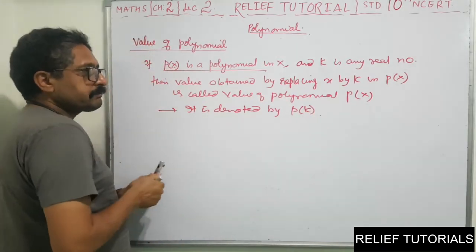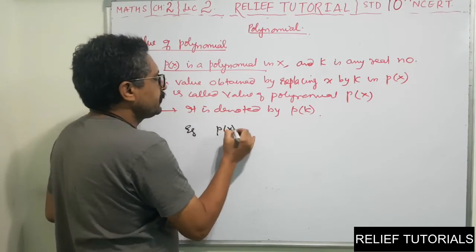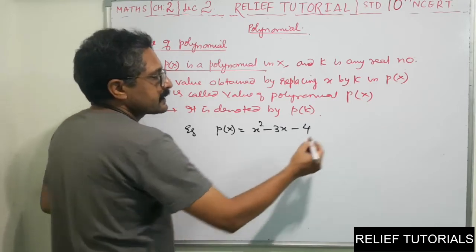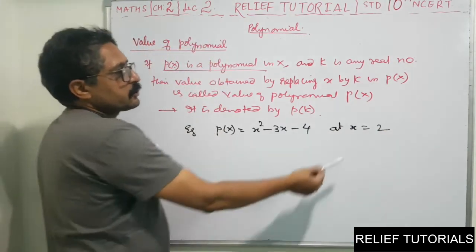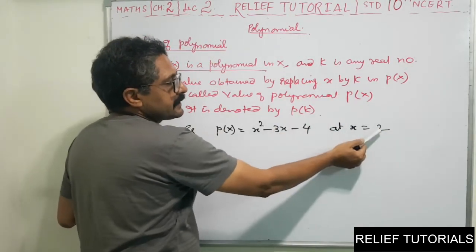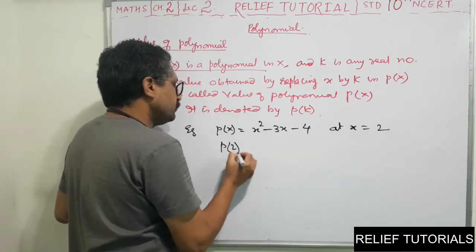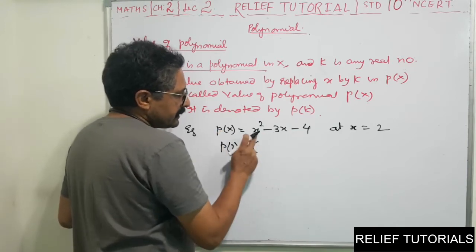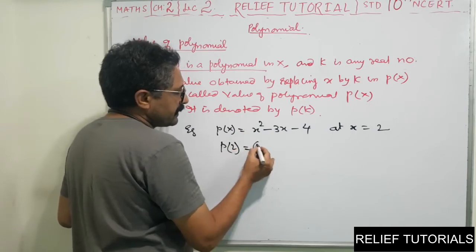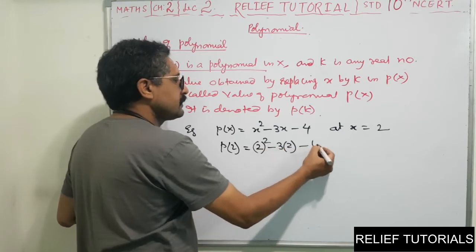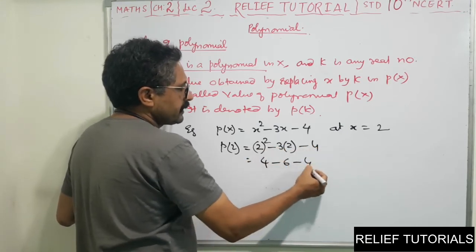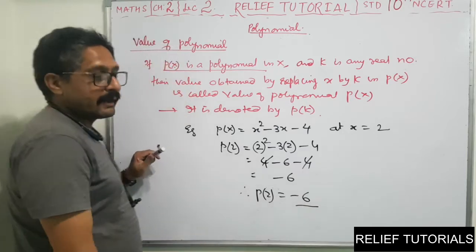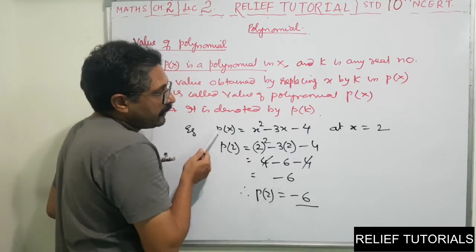For example, take polynomial P of X equals X squared minus 3X minus 4. We want to find the value at X equal to 2. So P of 2 equals 2 squared minus 3 into 2 minus 4, which is 4 minus 6 minus 4, equal to minus 6. So P of 2 equals minus 6, which is the value of polynomial P of X at X equal to 2.